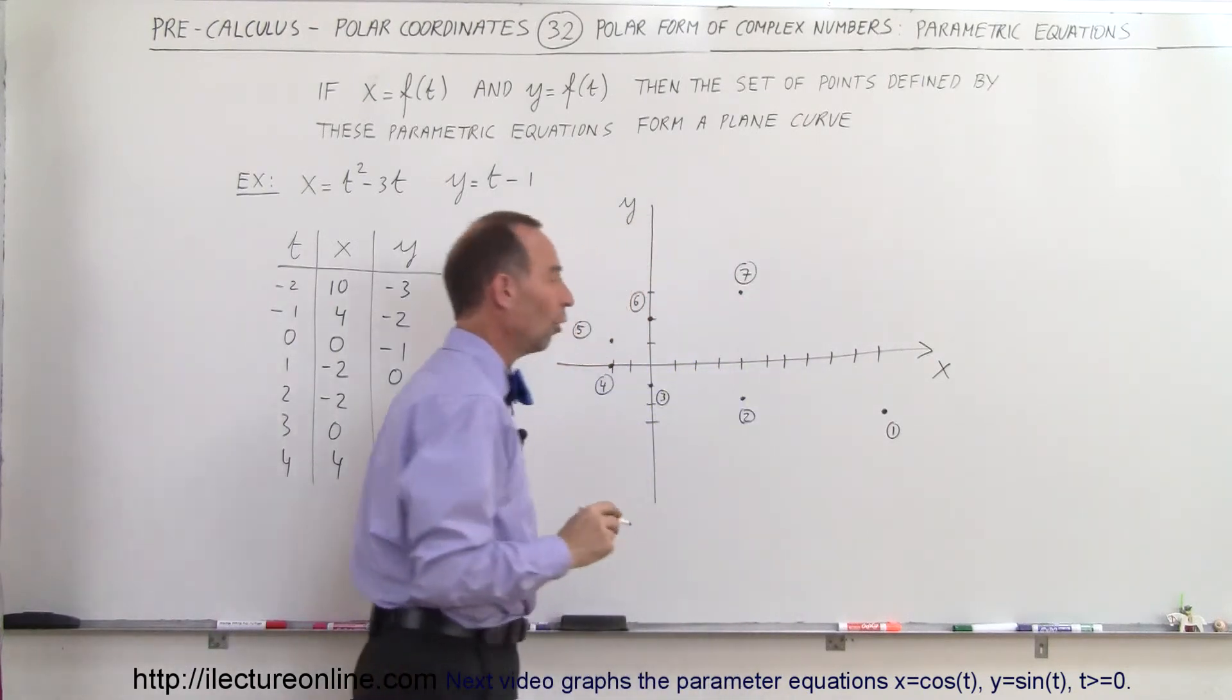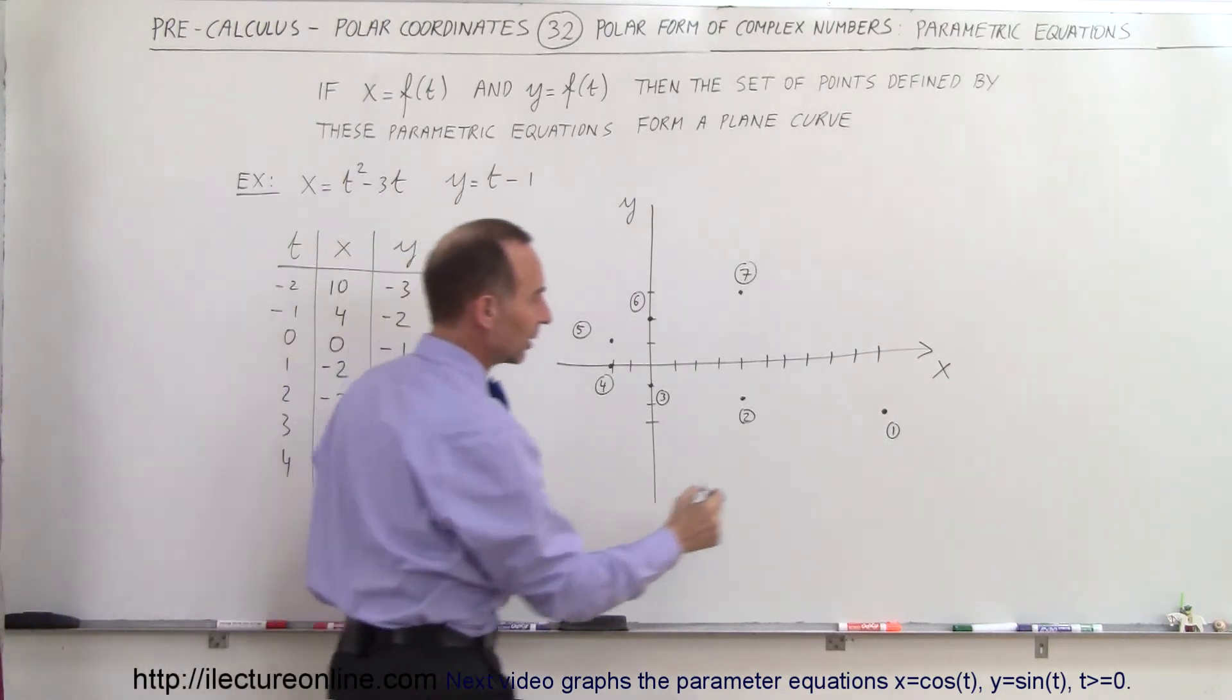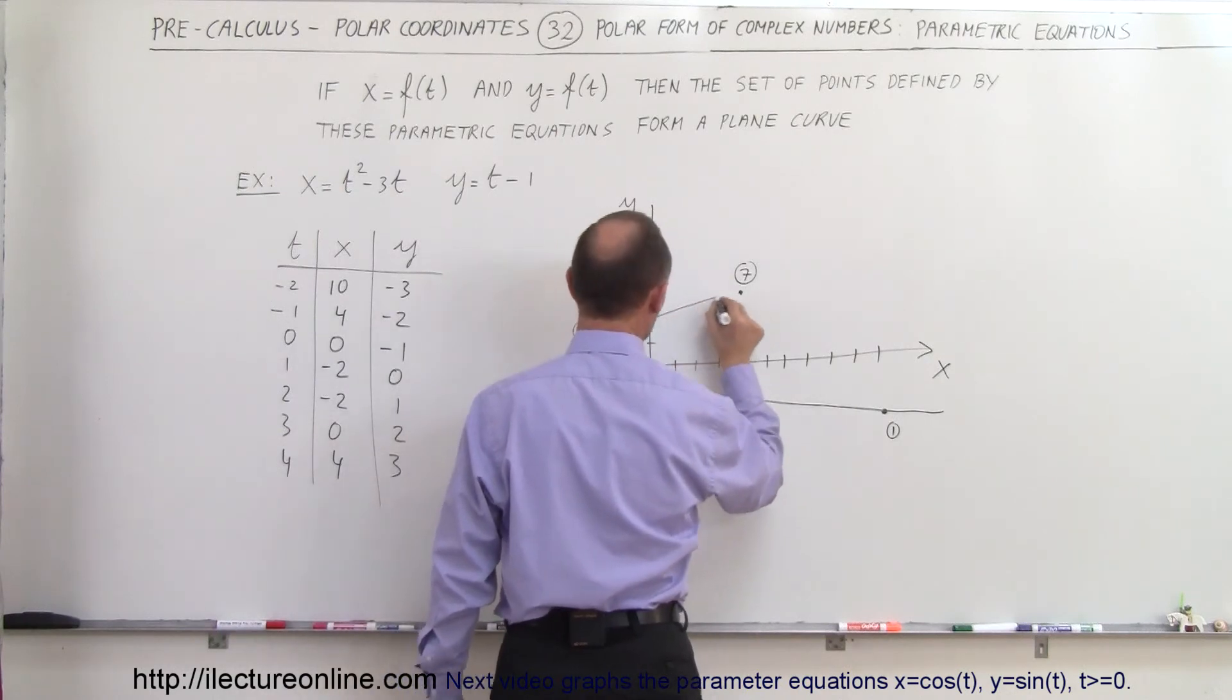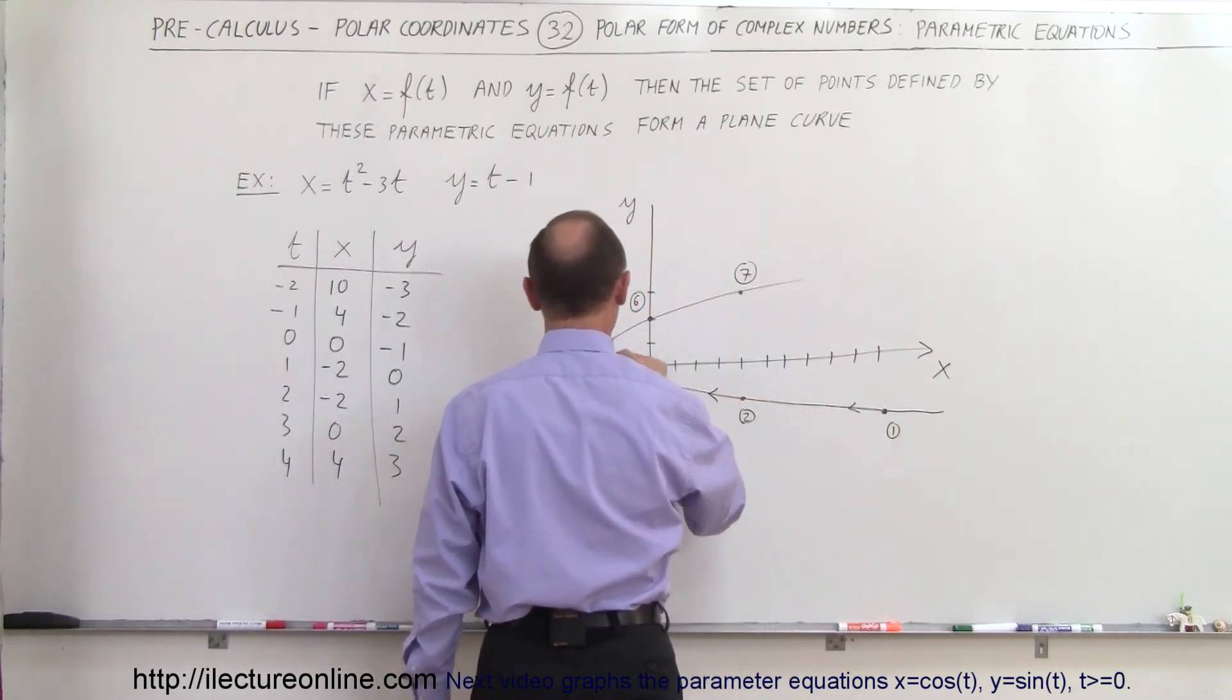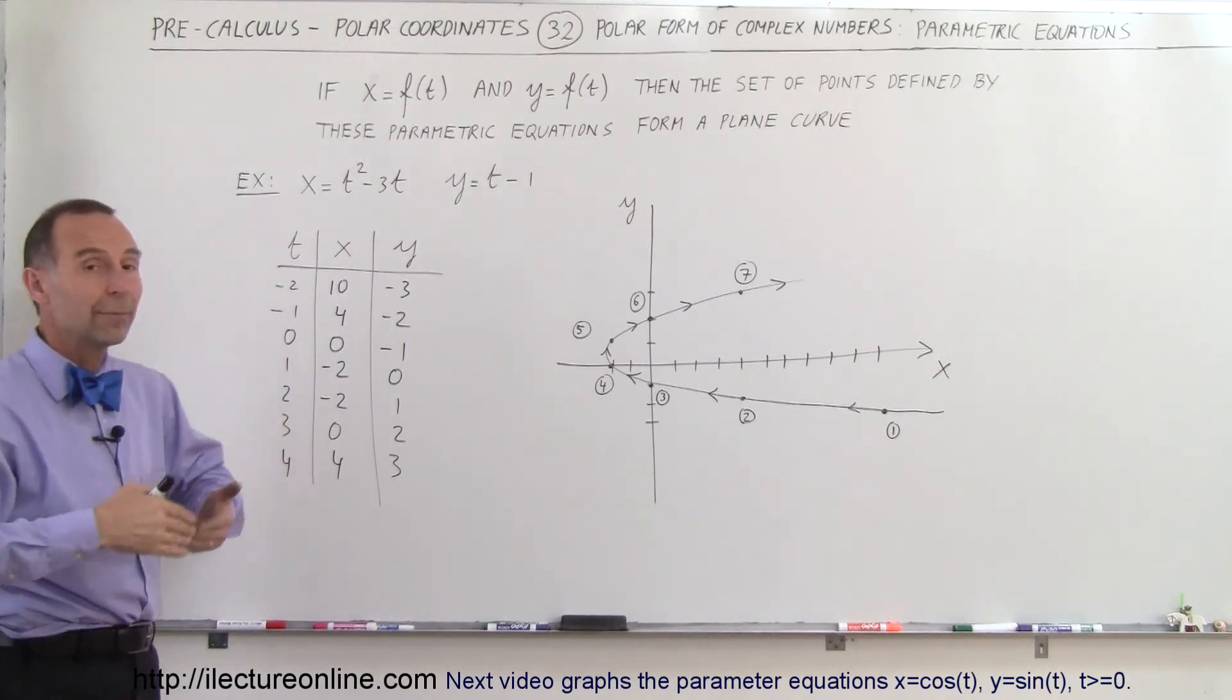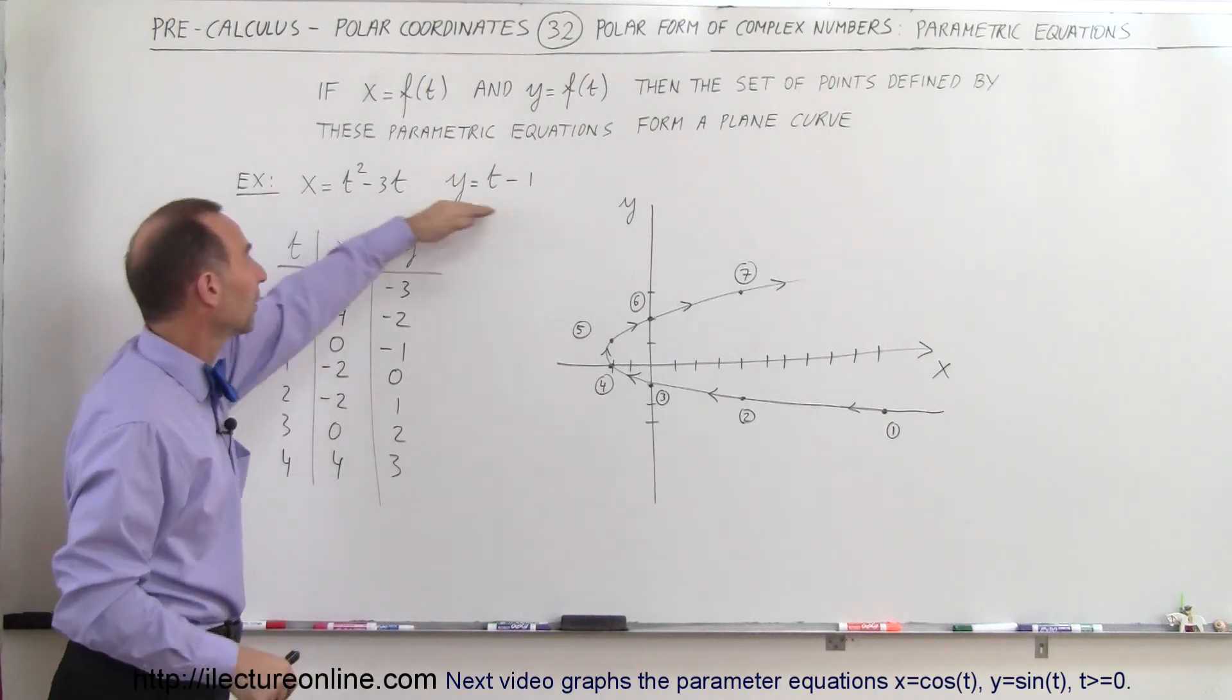So if t really does represent time, you can then see the path that the particle is taking. If we connect those points, you can see that it looks kind of like this. And of course, the particle then would be moving in this direction. And so that's what we mean by parametric equations, that the two variables x and y depend on time, the same time, but in different ways. And so that's why these are called parametric equations.